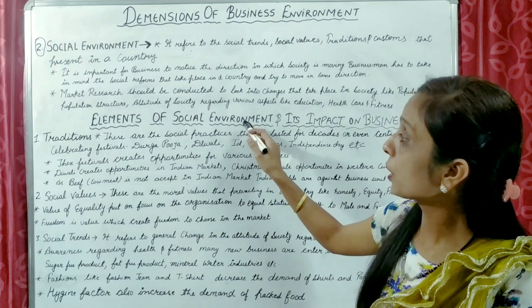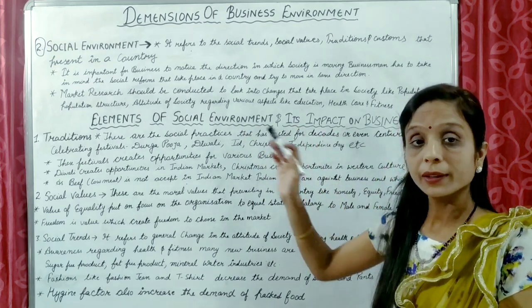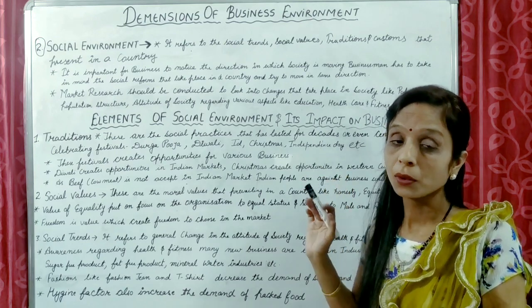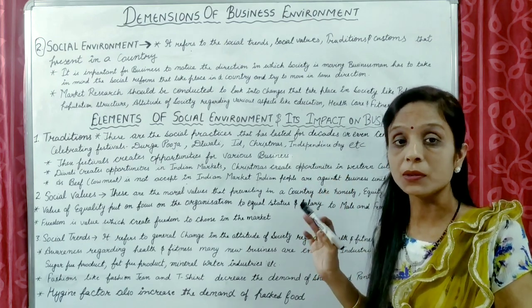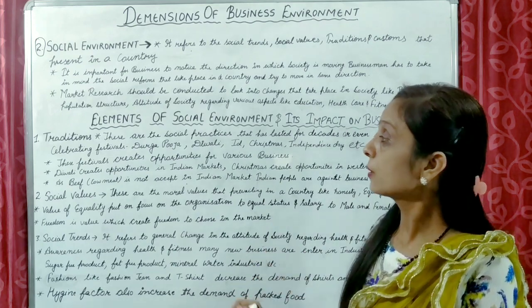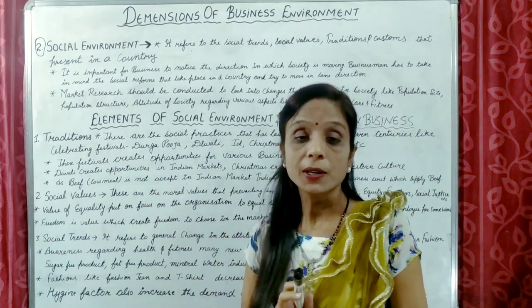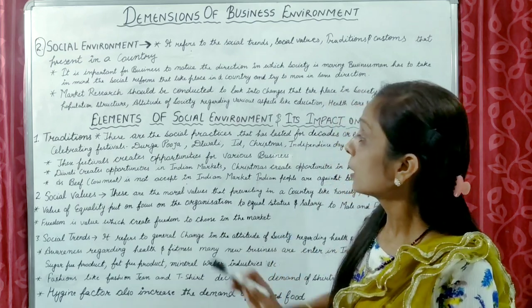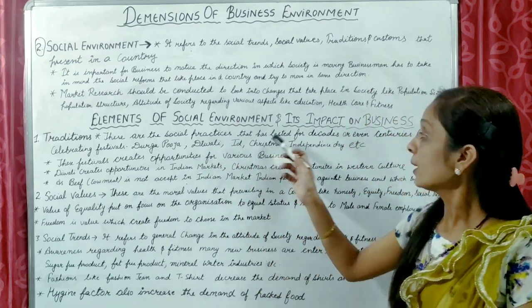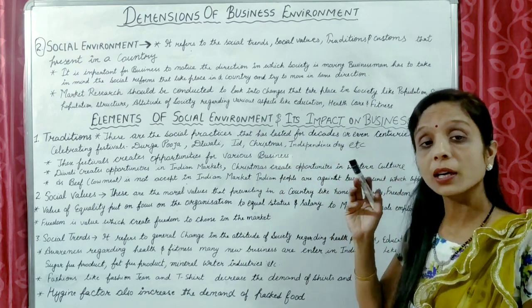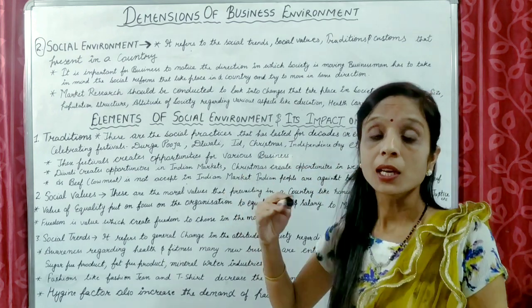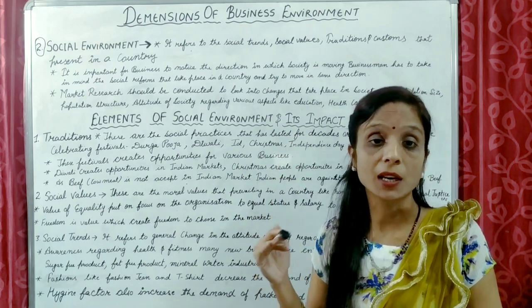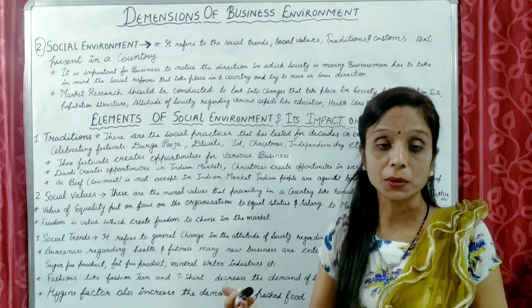Now, what is included in the elements of social environment? What are the elements of social environment and what are the impacts of these elements on a business organization? The first element is tradition. Tradition means the social practices that have lasted for decades — practices that have been followed in our country or in the culture where our business operates for many generations.